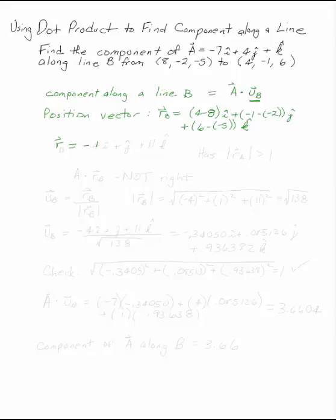R is -4i + j + 11k. This is a position vector along line B. It's not the unit vector.